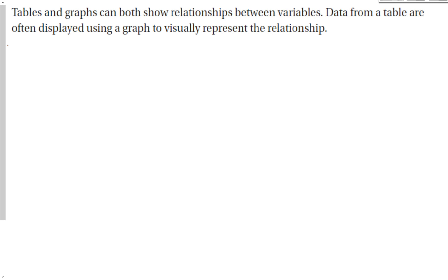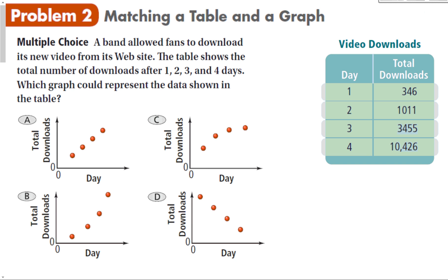Tables and graphs can both show relationships between variables. Data from a table are often displayed using a graph to visually represent the relationship. In Problem 2, a band allowed fans to download its new video from its website. The table shows the number of downloads after one, two, three, and four days. Which graph could represent the data shown in the table?